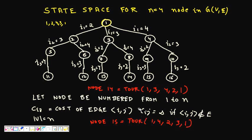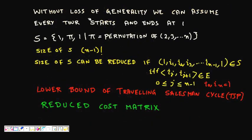If nodes are numbered 1 to n, then C(i,j) is the cost of edge (i,j), and C(i,j) is infinity if (i,j) is not an edge. Without loss of generality, we can assume every tour starts and ends at node 1, since in a cycle everything is symmetric — you can take any node as the starting point.